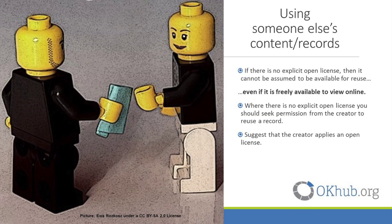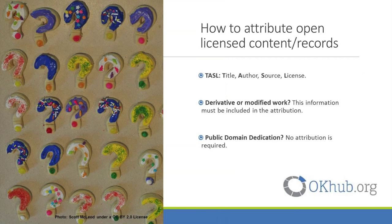So how do you use someone else's content or records? If text, data or a bibliographic record does not have an explicit open licence, then it cannot be assumed to be available for reuse. This is true even if it is freely available to view online. You should ideally seek permission from the creator to reuse a record. To enable future reuse, suggest that the creator applies an open licence rather than granting a one-off permission.